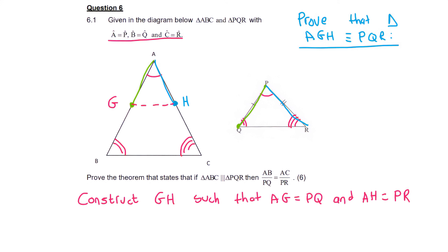So we can say that angle A is equal to angle P. Why? Because that was given to us. Remember they gave that to us here. We can now say that the green line, which is AG, is equal to PQ. There's no reason for that. We made it like that. We did the construction like that. And then we can say AH is the same as PR.